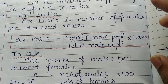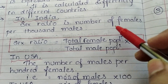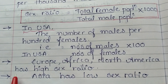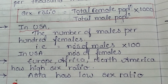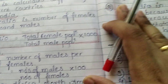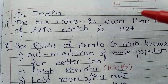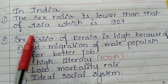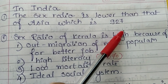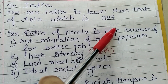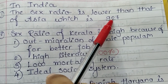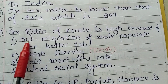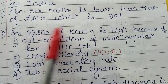In Europe, Africa, and North America, the sex ratio is high, whereas Asian countries have a lower sex ratio compared to those countries. In India, the sex ratio is lower than that of Asia — India's sex ratio is 927, which is lower compared to the Asian average.